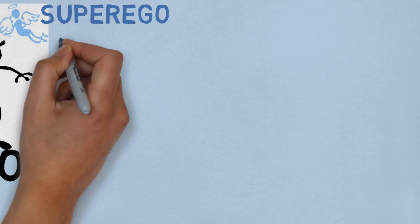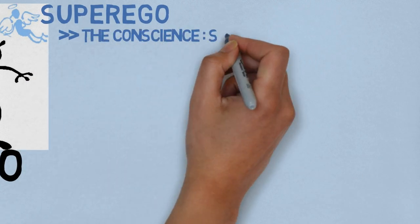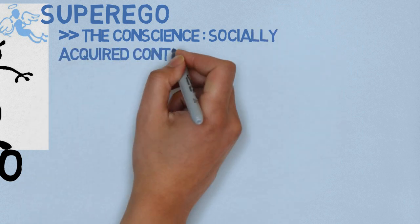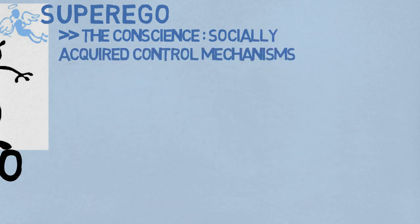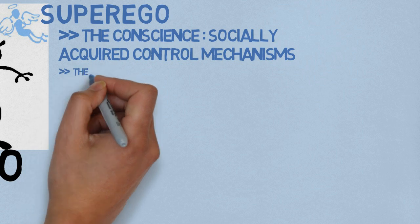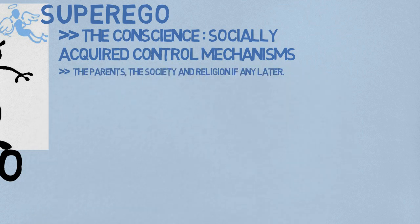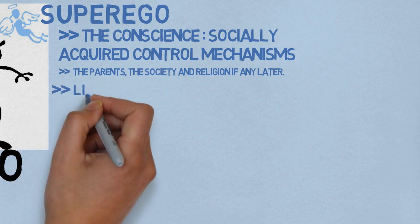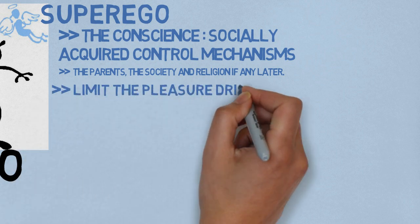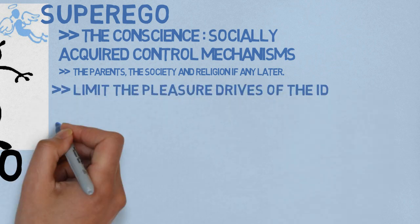The Super Ego is the part which contains the conscience, namely socially acquired control mechanisms which have been internalized and which are usually imparted in the first instance by the parents and the society, also religion, if any later. The Super Ego seeks to limit the blind, pleasure-seeking drives of the ID by the imposition of restrictive rules.